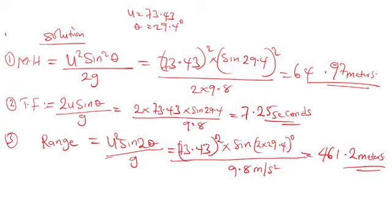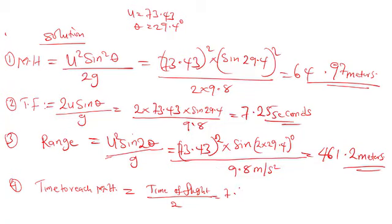So the range of this is measured in meters and the maximum height which is also measured in meters. And now finally, I want to talk about the fourth point that we're supposed to take into consideration, which was the time taken to reach the maximum height. Time to reach maximum height is equal to time of flight divided by two, which is: the time of flight was 7.25, so 7.25 divided by two = 3.625. Time is seconds.